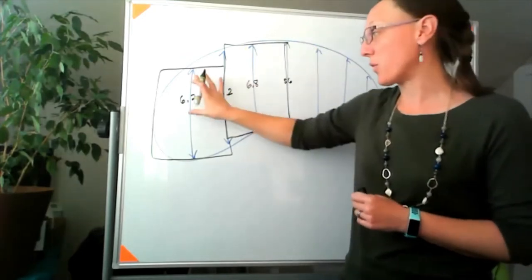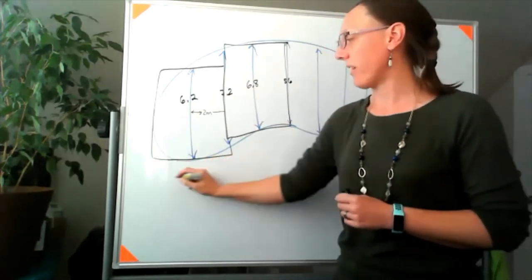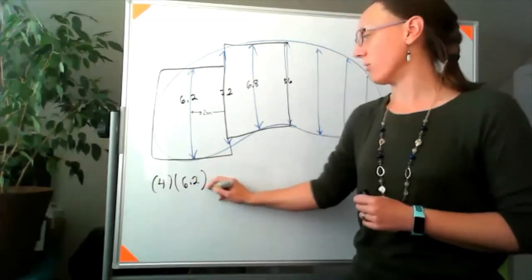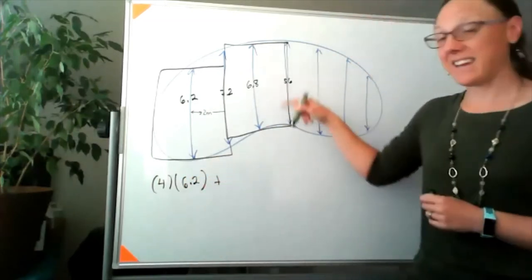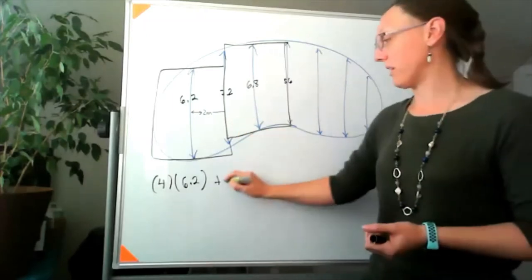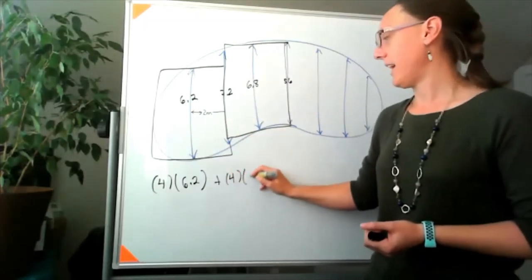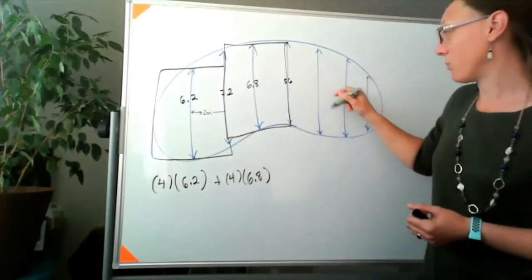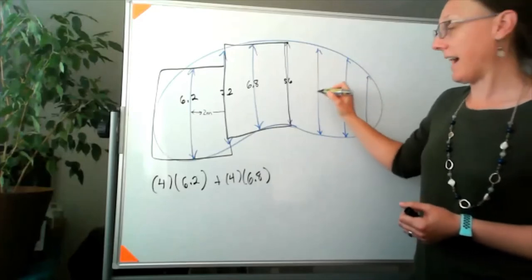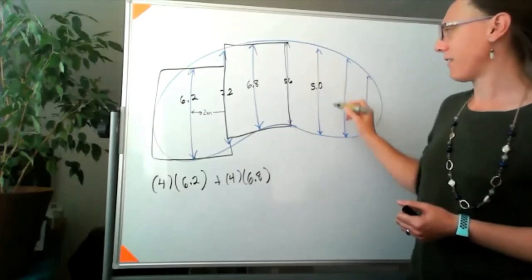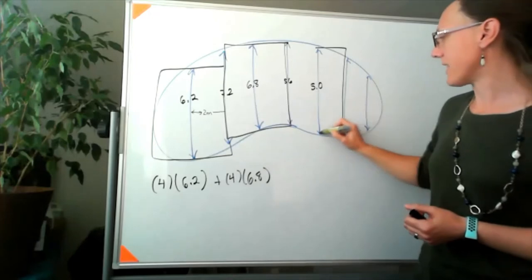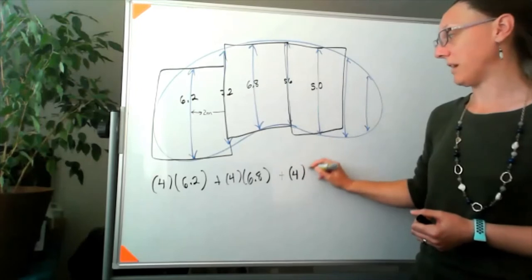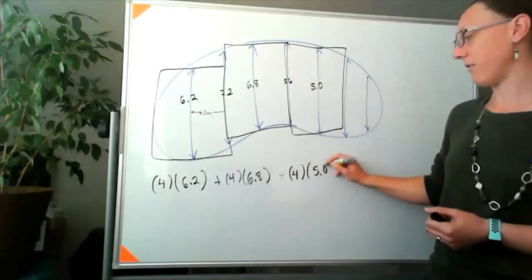So far, what that means is this first rectangle has a width of 4 meters and a height of 6.2. This next piece has a width again of 4 meters and a height of 6.8. The next piece — there's a 5.6, but we're not going to use that. We'll scoot over and use the 5.0 and draw our rectangle in right there, so that this piece has a width of 4 meters and a height of 5.0.